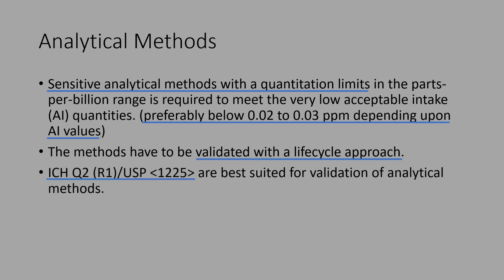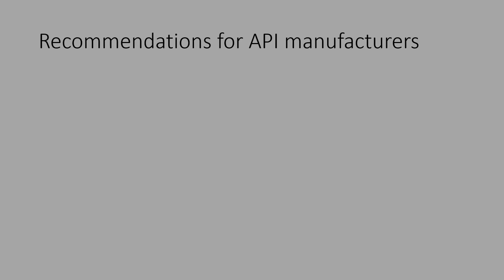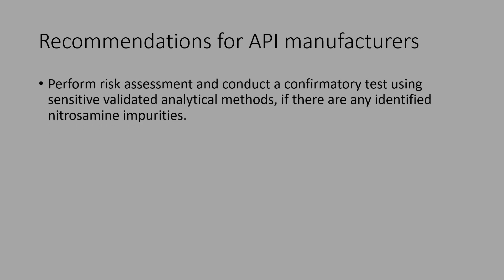ICH Q2(R1) and USP 1225 are the best suited for validation of analytical methods. The recommendations for API manufacturers are as follows: perform a risk assessment and conduct confirmatory tests using sensitive validated analytical methods if there are identified nitrosamine impurities. It is necessary that a detailed risk assessment be carried out, and if there is any evidence of the presence of nitrosamines, a confirmatory test using a sensitive analytical method must be conducted.